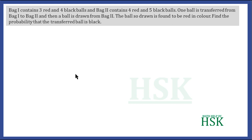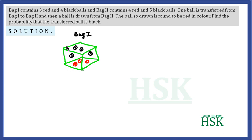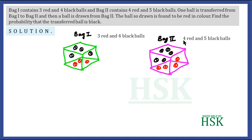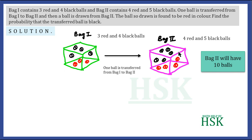To solve this question, first we picturize the given condition. Bag 1 contains 3 red and 4 black balls, and Bag 2 contains 4 red and 5 black balls. One ball is transferred from Bag 1 to Bag 2. From Bag 1 we take one ball and transfer it into Bag 2, so Bag 2 will now have 10 balls because one ball is added, and from these 10 balls a ball is drawn from Bag 2.